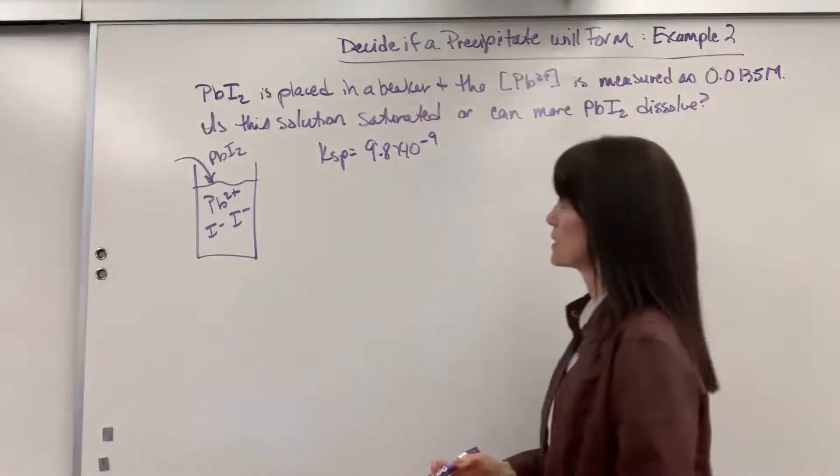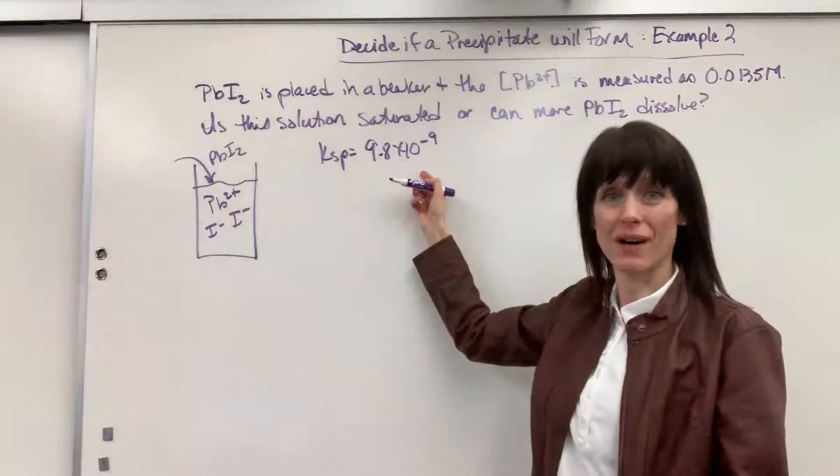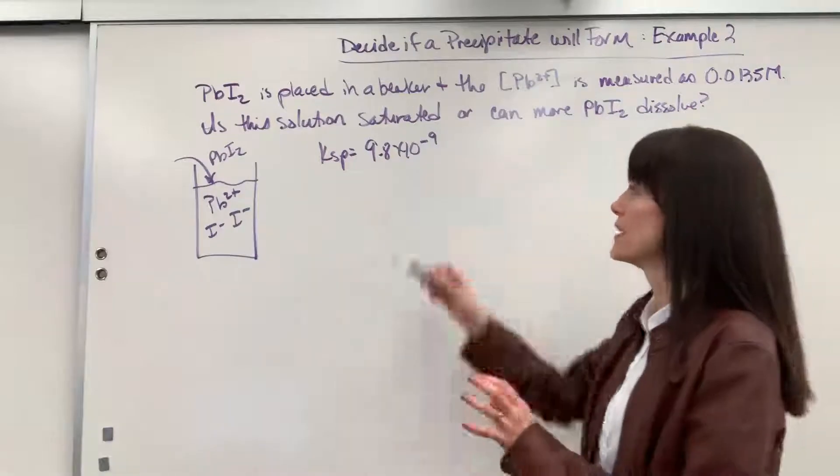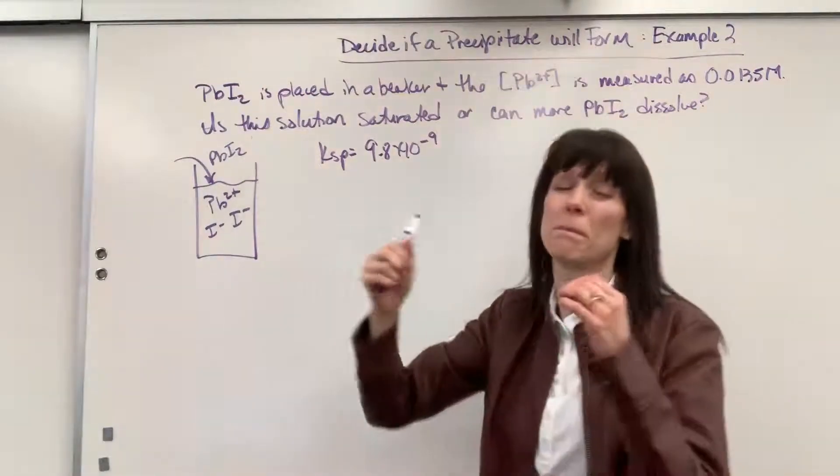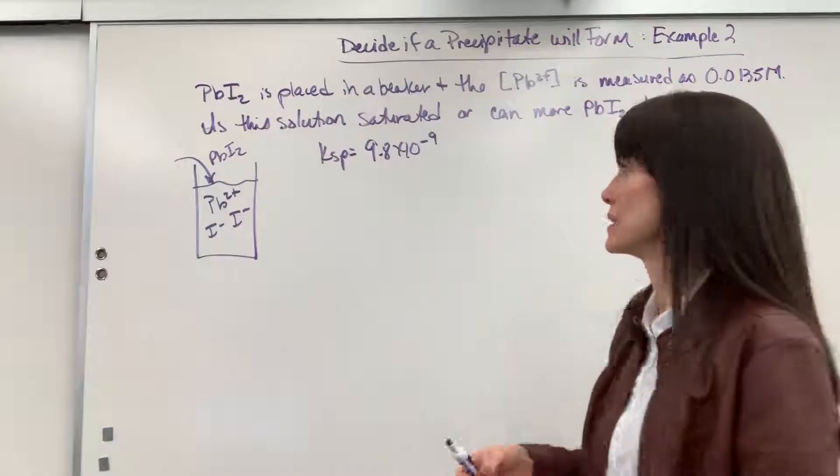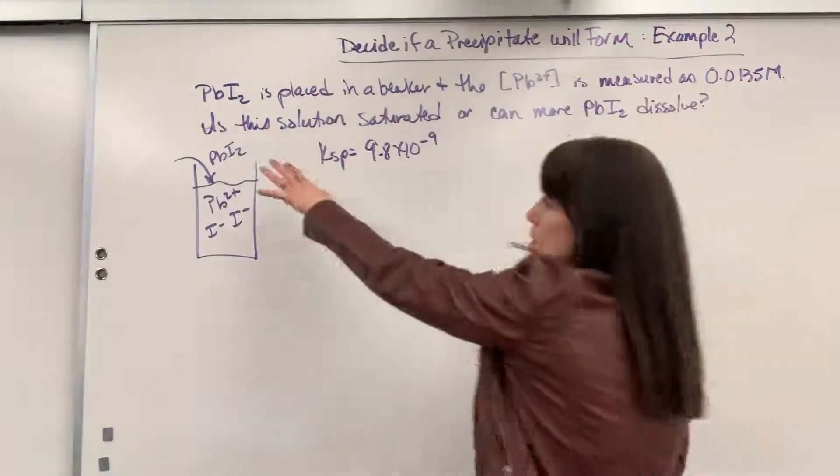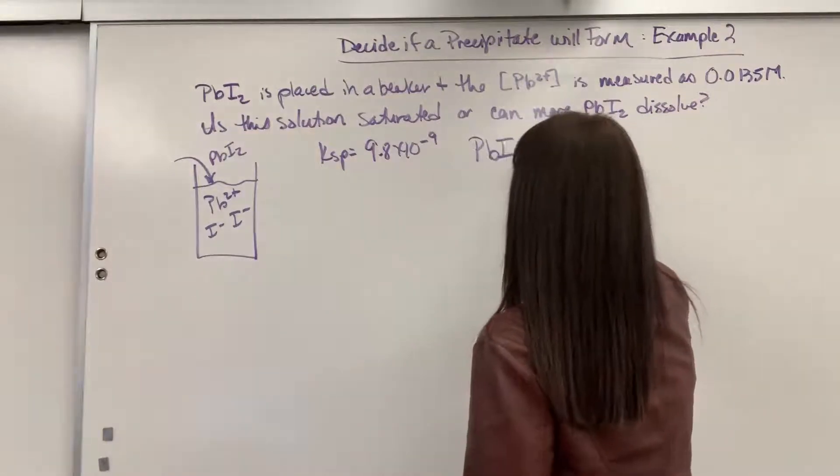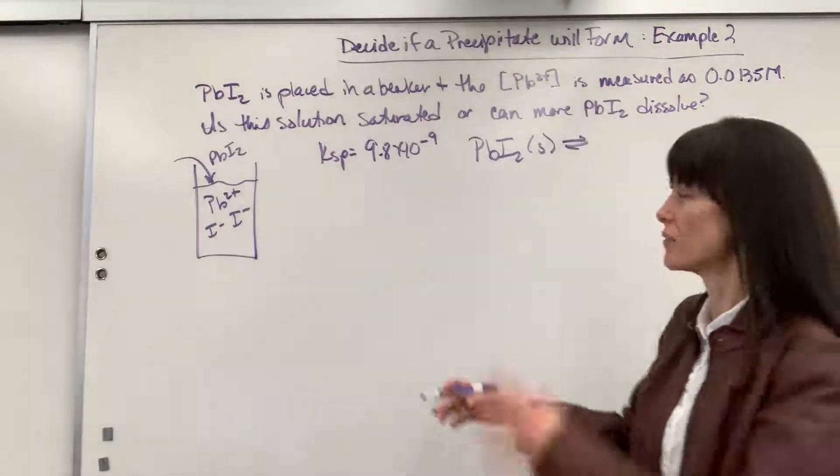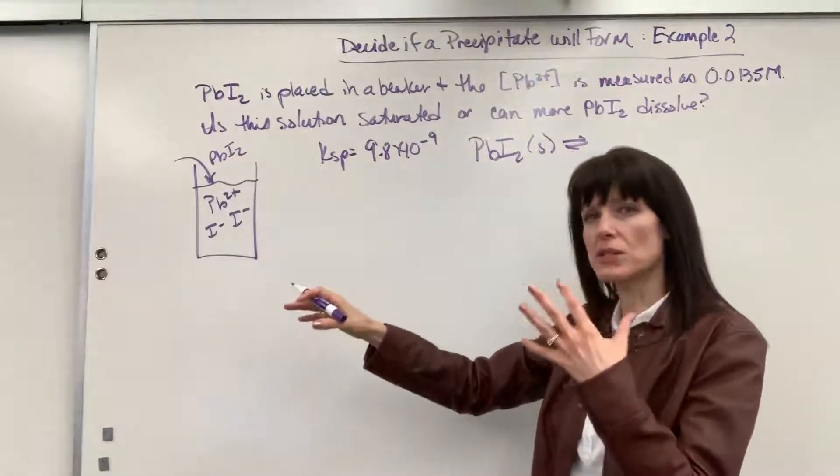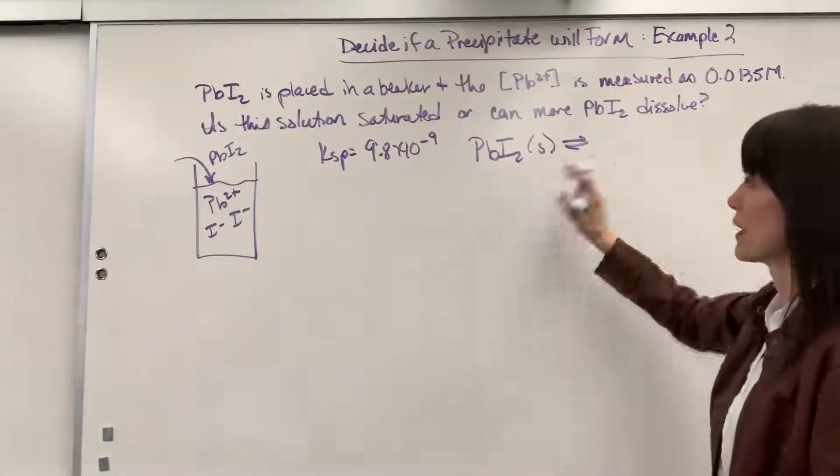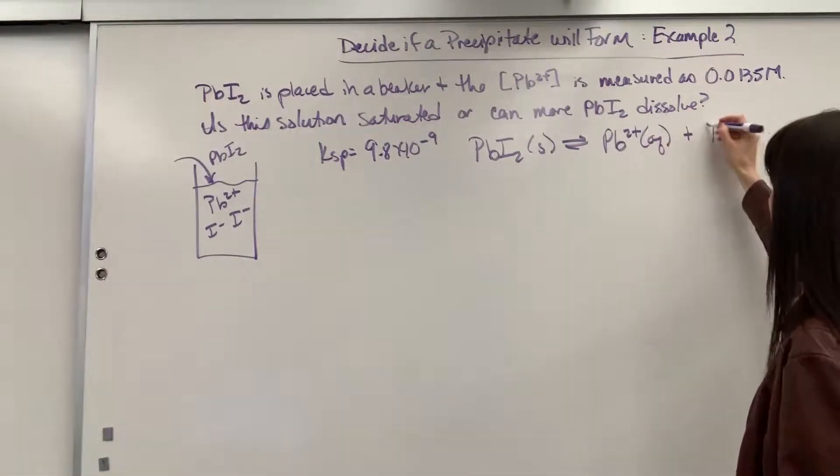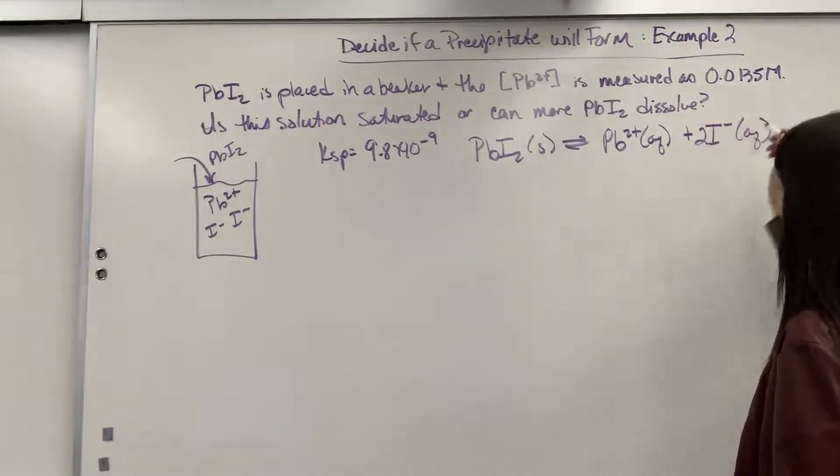9.8 times 10 to the minus 9. That is really small, much less than one, which tells us we're very, very reactant favored. This right here, the lead iodide will barely break apart. It will barely dissociate. So I'm going to go ahead and write out this dissociation equation. One of the first places I start, I'll visualize and write down what's happening with the beaker so I have a picture of it in my head. And then I write the equation.